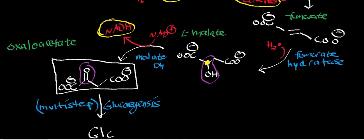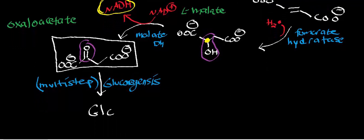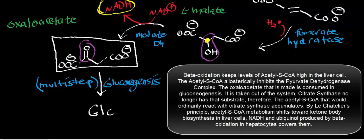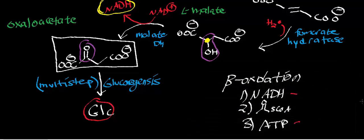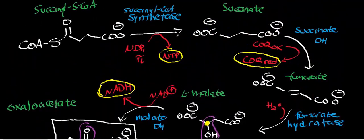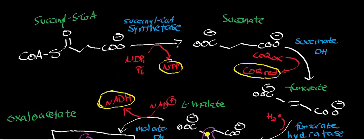Oxaloacetate has a special function in liver cells. In other cells it would normally be consumed by citrate synthase, but liver cells running on beta-oxidation direct oxaloacetate into gluconeogenesis. The oxaloacetate leaves the mitochondrial matrix, enters the cytosol, and goes through approximately 10 gluconeogenic enzymes to make glucose. The liver then dumps that glucose into the bloodstream to serve extra-hepatic tissues.